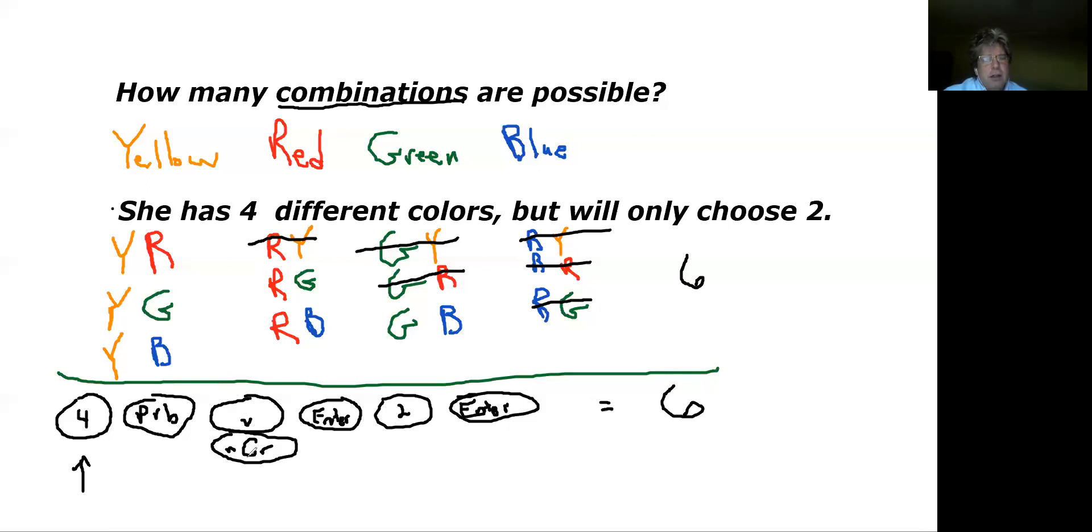Then using your directional pad, you'll hit the down arrow to highlight the nCr. Once the nCr is highlighted, you then hit enter, and then you can hit the key for two for two choices. Hit enter again and that'll give you the six.